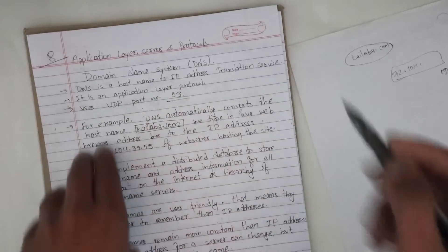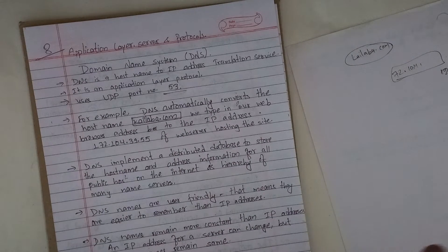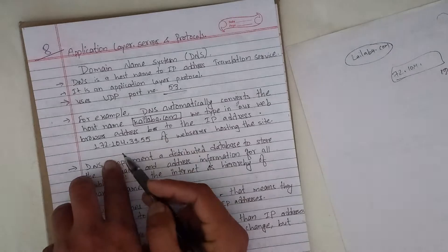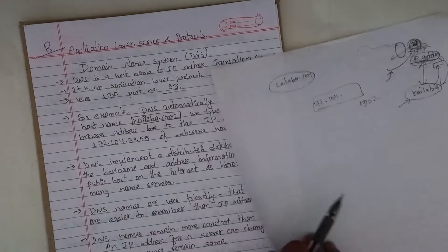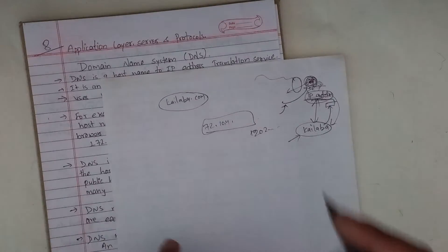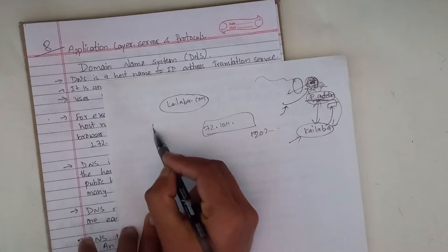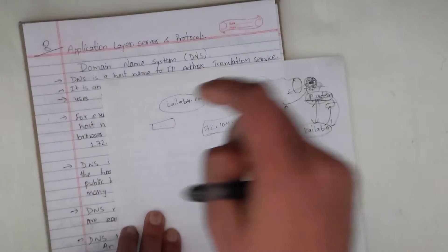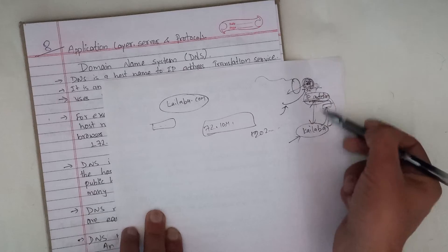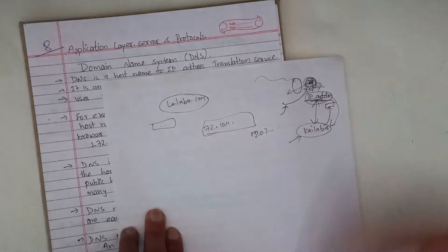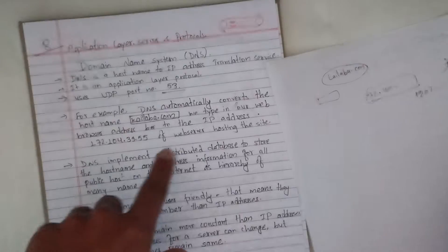For example, DNS automatically converts the hostname kailaba.com that we type in our web browser to the IP address 172.104.39.55 of the web server hosting that site. If we use Chrome browser and type kailaba.com, DNS will find and return the actual IP address.